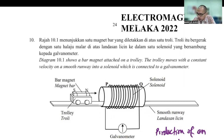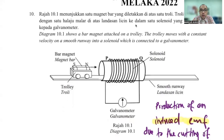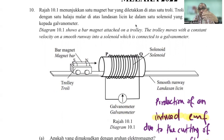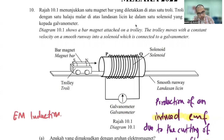The first question comes from Malacca. Diagram 10.1 shows a bar magnet attached to a trolley — a very interesting question. The trolley moves with a constant velocity on a smooth runway into a solenoid which is connected to a galvanometer. This is where we start to identify the zone. Whenever you approach a Paper 2 question, you need to know which zone you're in. A common confusion is how to differentiate between electromagnetic induction and the force on a current-carrying conductor.